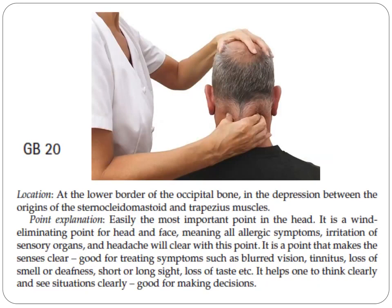Next point is GB20. It is located at the lower border of the occipital bone, in the depression between the origins of the sternocleidomastoid and trapezius muscles. It is easily the most important point in the head. It is a wind-eliminating point for the head and face, meaning all allergic symptoms, irritation of sensory organs, and headaches will clear with this point. It makes the senses clear and is good for treating symptoms such as blurred vision, tinnitus, loss of smell or deafness, short or long sight, and loss of taste. It helps one to think clearly and see situations clearly, thus it is good for making decisions.